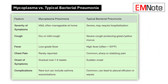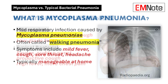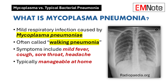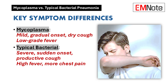They both involve inflammation of the lungs, but they have very distinct characteristics that demand different approaches to diagnosis and treatment. With mycoplasma pneumonia — sometimes called walking pneumonia — it's caused by the bacterium Mycoplasma pneumoniae. Typical bacterial pneumonia is usually triggered by the usual suspects like Streptococcus pneumoniae and Haemophilus influenzae. That difference in root cause is really where it gets interesting, and it translates directly to clinical presentation.